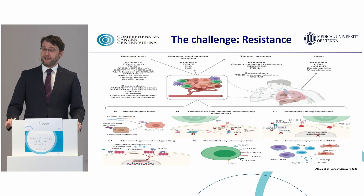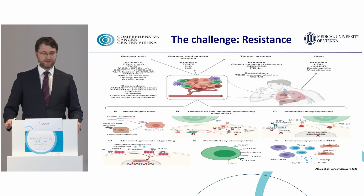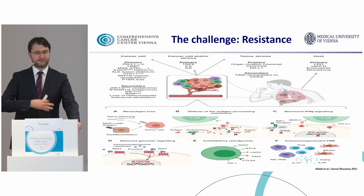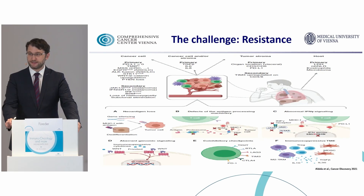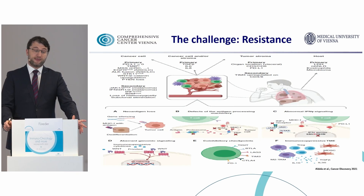Looking more closely at resistance, we know it can occur at the cancer cell itself. If the tumor overexpresses PD-L1 or has mutations in oncogenic pathways, resistance might occur. There is also resistance from the cancer cell–microenvironment interaction — for example, the tumor secretes TGF-beta, which is quite immunosuppressive, and this might cause resistance as well. There is also resistance attributed to the tumor stroma.